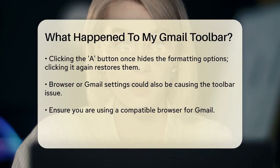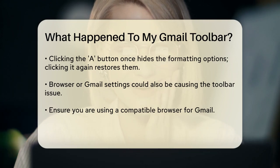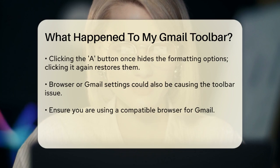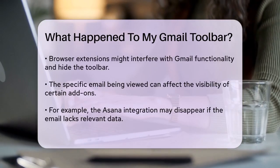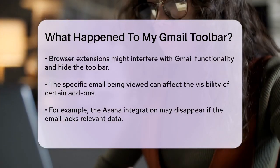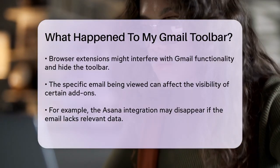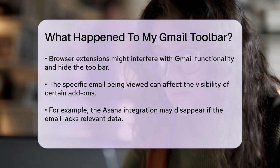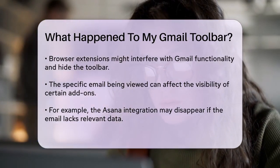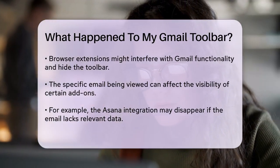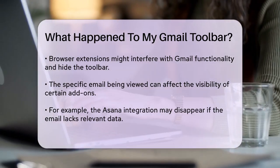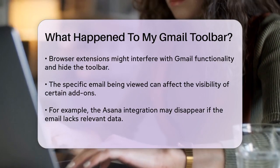If the issue persists, it could be related to the specific email you are viewing. Some Gmail add-ons, like the Asana integration, can disappear if the email you are looking at does not contain relevant data for the add-on to interact with. For example, the Asana icon in the Gmail sidebar might disappear if the email is not related to Asana tasks, but it will reappear when you open an email that has Asana data associated with it.